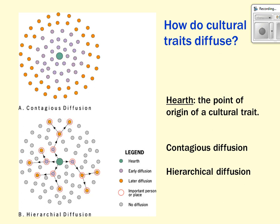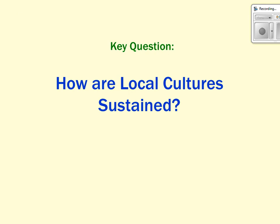The hearth is a really important term to know — it's the origin, the point of origin, the place of origin for a culture trait. Culture traits can spread contagiously or hierarchically. Contagious means it spreads in all directions to as many people as possible — everyone is a possible connection for that trait. Hierarchical diffusion picks and chooses, leapfrogging over other places to target certain groups or areas first.